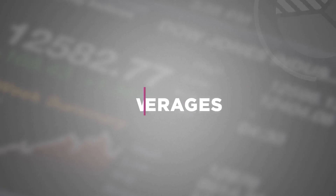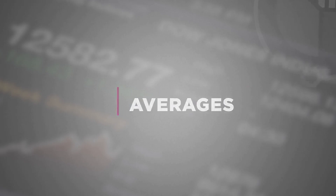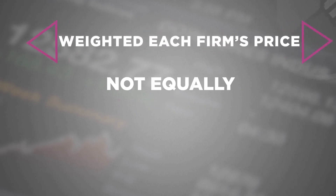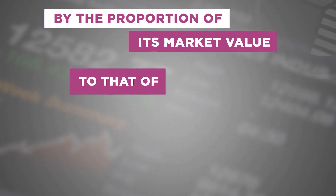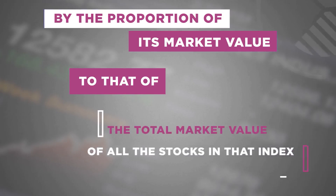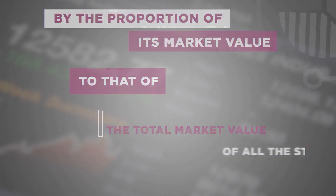People started to play with weighted averages. A common approach, still popular to this day, is to weight each firm's price not equally, but by the proportion of its market value to the total market value of all stocks in that index. By making it a market-value weighted average, the problem of stock splits messing up the index doesn't occur.